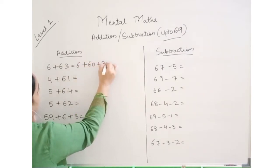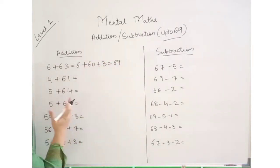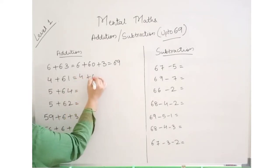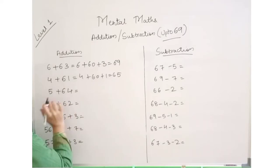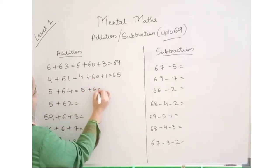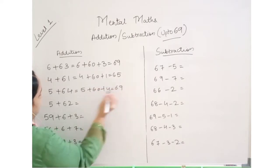I won't repeat. I hope you all have understood. 4 plus 60 plus 1, answer is 65. Because 5 and 1, 4 and 1, we have added 64 plus 5. Same way, 5 plus 60 plus 4, answer is 69.